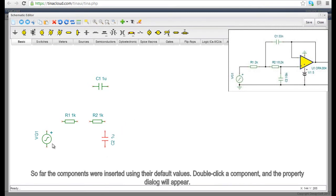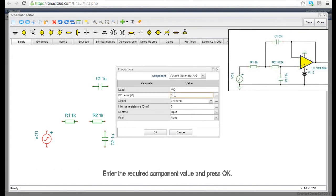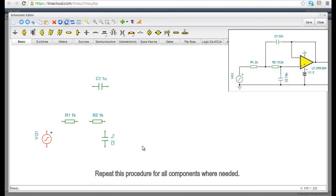So far, the components were inserted using their default values. Double-click a component and the property dialog will appear. Enter the required component value and press OK. Repeat this procedure for all components where needed.